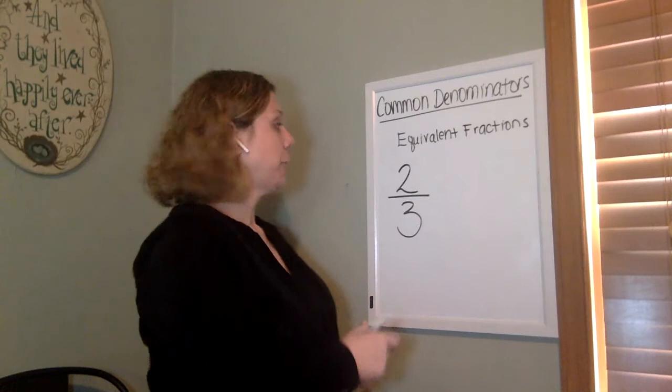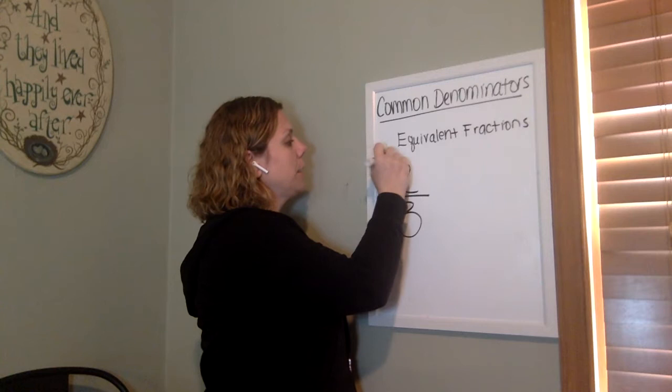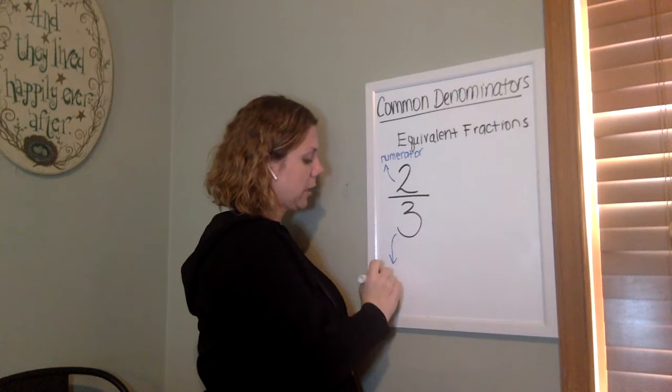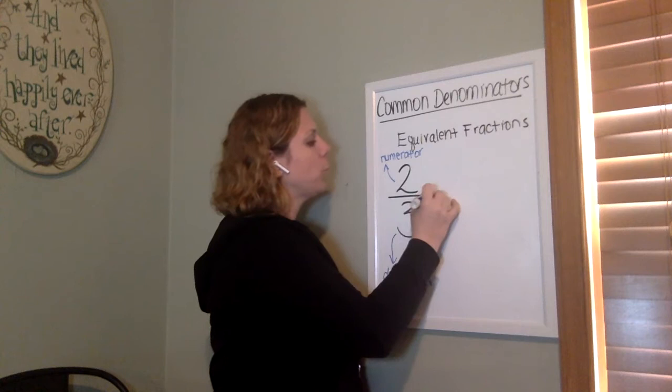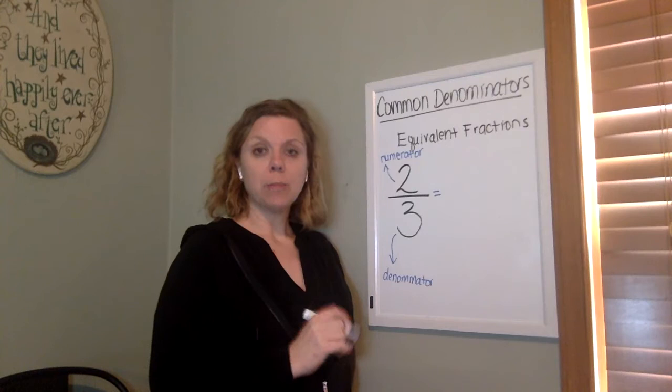So let's review basic fraction terminology. When we have a fraction we have our numerator on top and that is our part, and then we have our denominator on the bottom and that is our whole what that's divided into. When we're talking about equivalent fractions we're saying this fraction is written in a different way but it represents the same amount of stuff.